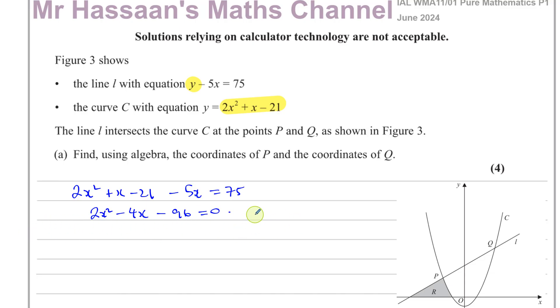Before I try to solve this, I can divide everything by 2 to make it easier. Each of those are even numbers. So 2x squared divided by 2 is x squared, minus 4x divided by 2 is 2x, minus 96 divided by 2 is 48.